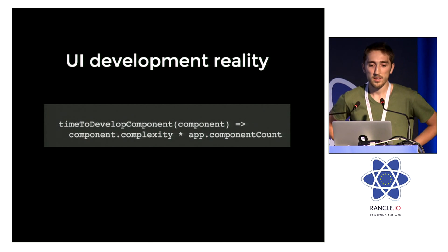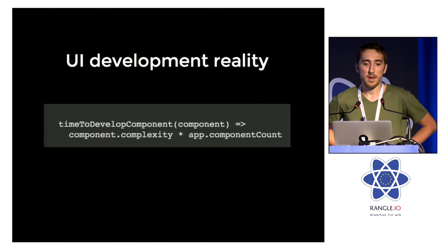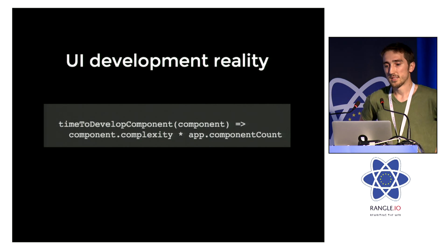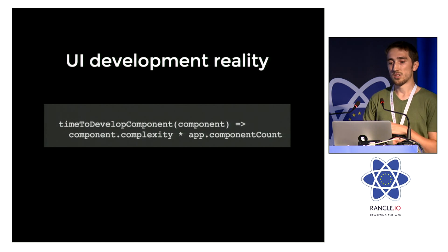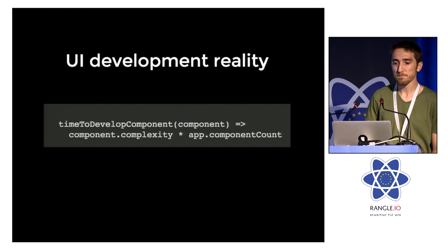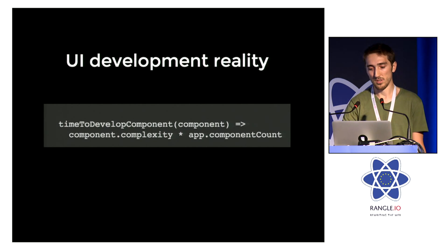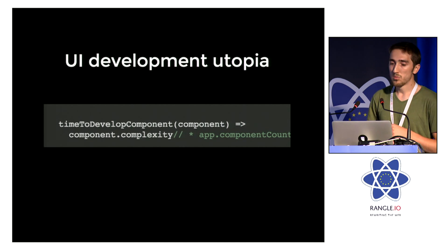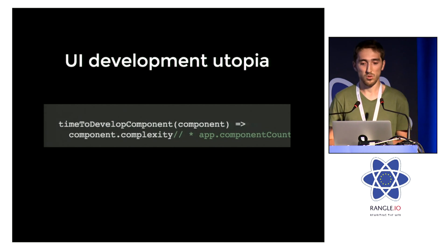Before working with React, I was working on a backbone app that was getting harder and harder to maintain with every new component added. New components took longer to implement than the previous ones, because adding a component also meant disturbing a lot of the existing ones. So I started thinking of a way to prevent this in the future, to create a better development environment. The goal was to remove the total number of existing components from the time-to-develop-component function.